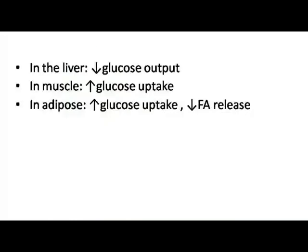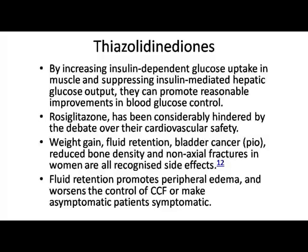In the liver, TZDs decrease glucose output; in muscle and adipose tissue, they increase glucose uptake; in adipose tissue, they decrease fatty acid release. TZDs improve blood glucose by increasing insulin-dependent glucose uptake in muscle and suppressing insulin-mediated hepatic glucose output, producing reasonable improvement in blood glucose control. Rosiglitazone has been almost banned because of cardiotoxicity.